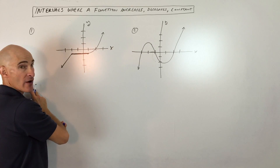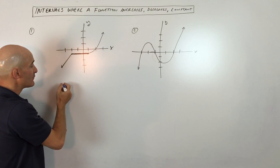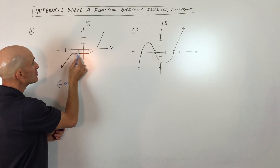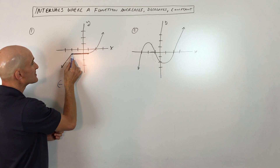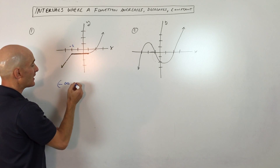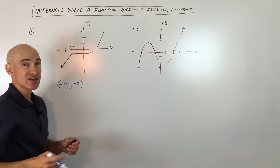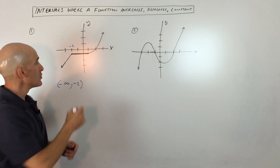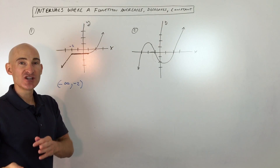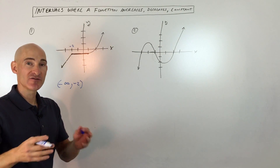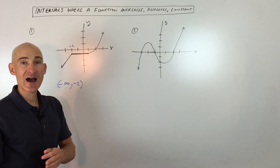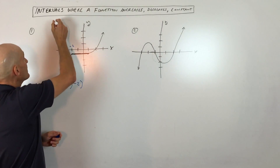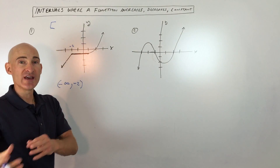Here you can see this is going off towards negative infinity, so we have negative infinity all the way up to where x is negative two. When you do the increasing and decreasing intervals, you want to make them open intervals. You don't want to include the endpoints — that's where it's changing direction, from increasing to decreasing or increasing to constant. So you always want these to be parentheses.